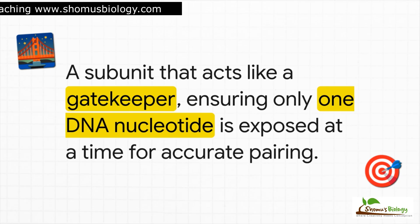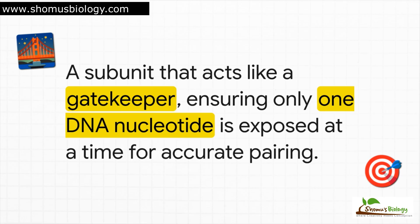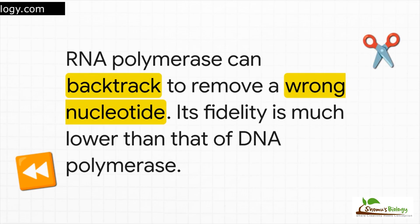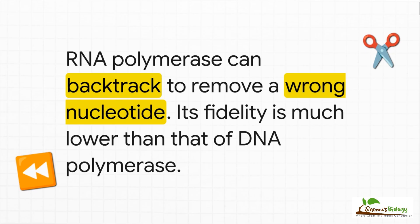So how does the polymerase stay so accurate? It has this incredible built-in feature called the protein bridge. This little piece of the enzyme forces a sharp bend in the DNA template, ensuring that only one single DNA base is exposed in the active site at any given time. It's like a little gatekeeper, making sure the right RNA nucleotide pairs up before it gets locked into the growing chain. But what if a mistake does slip through? RNA polymerase isn't as good at proofreading as its DNA counterpart, but it's not helpless. If it accidentally adds the wrong base, it can sense the mistake, pause, slide backwards one step, and use a built-in cutting function to snip out the wrong nucleotide. Its fidelity is much lower than DNA polymerase, so some errors do make it into the final RNA, but it does have a way to fix its most glaring mistakes.